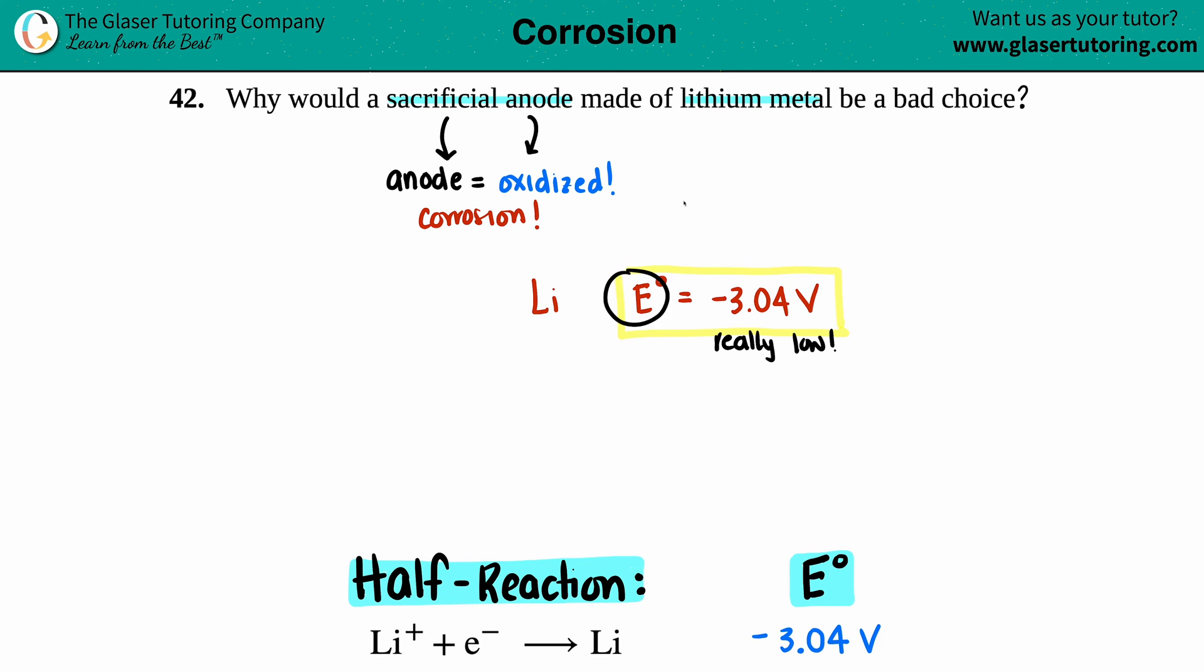Cell potential, you maybe would see like negative 0.34 volts, you might even see 1.2 volts, but a negative 3, that's really low. And in terms of the scheme of chemistry, if you're at an extreme, in this case it's an extremely low value, that translates into very reactive.